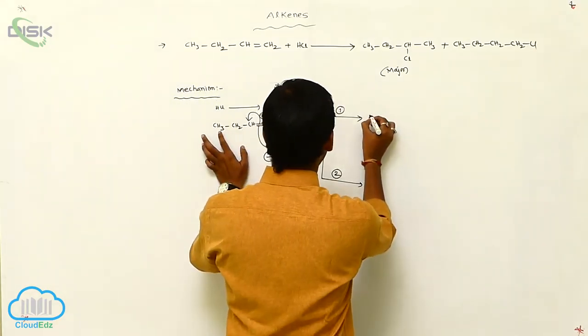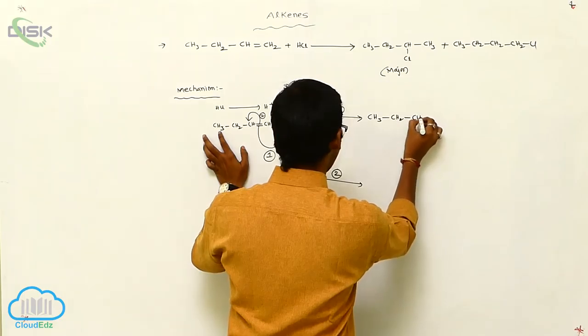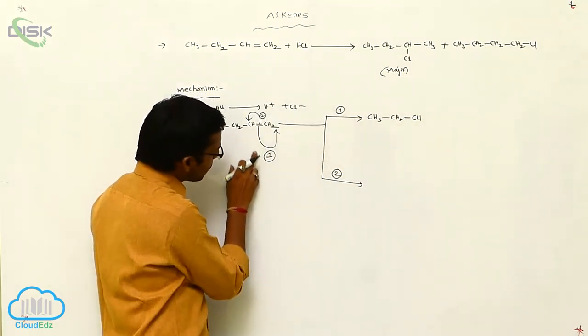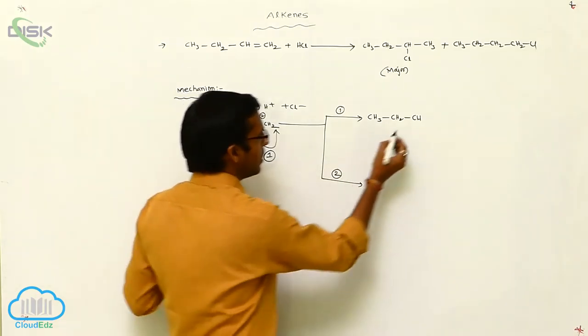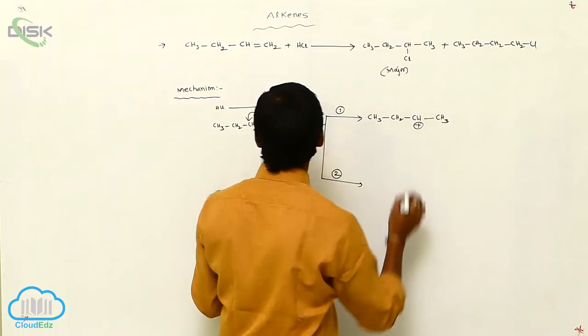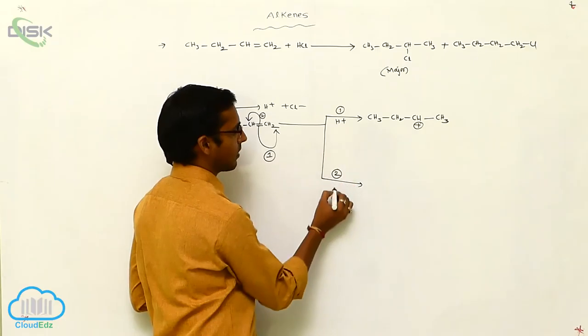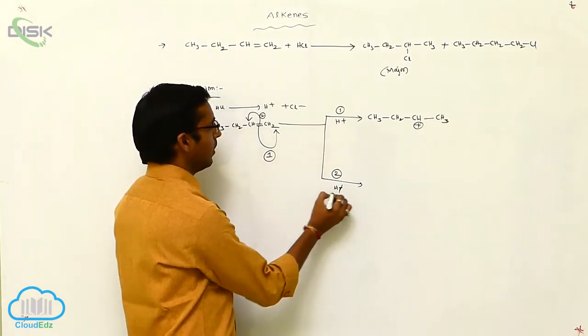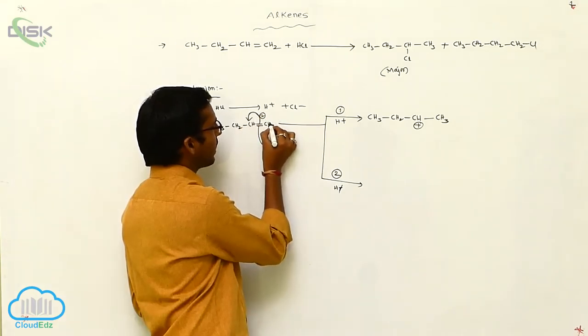Here cleavage is again two types. Whenever the cleavage is two types, now I am representing here in two manners. This is your first case, and this is your second case. In the first case, what happened? CH₃-CH₂-CH₂-CH(Cl).